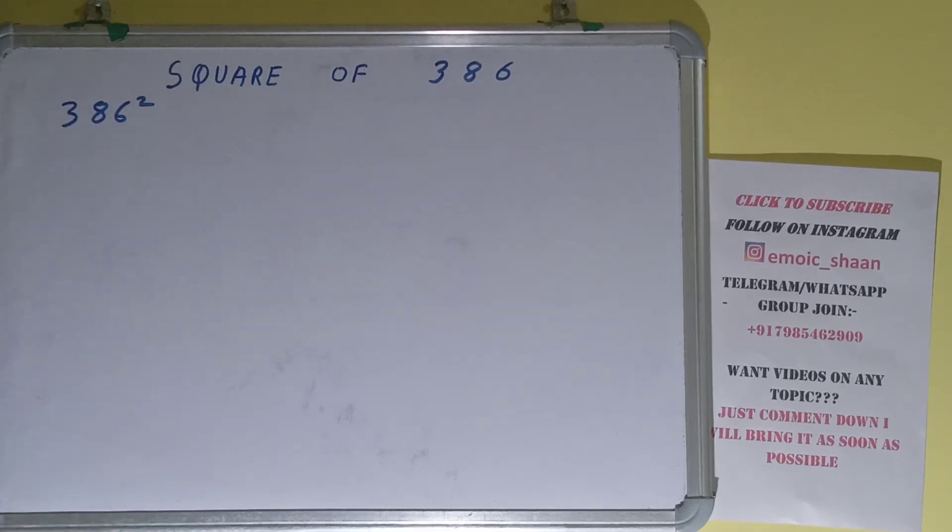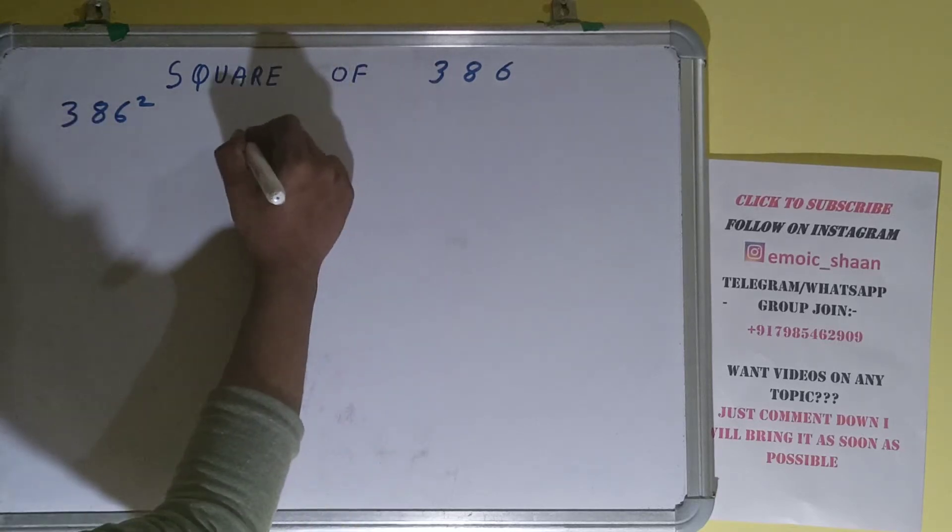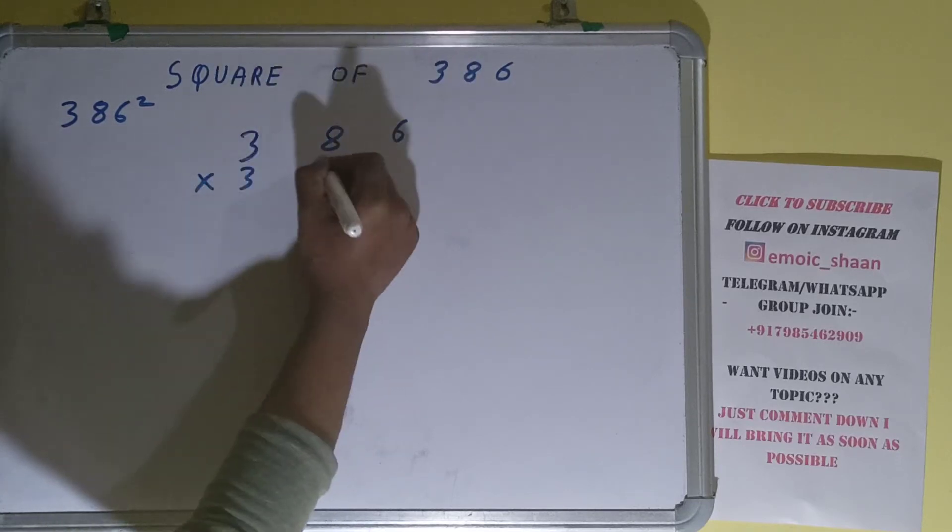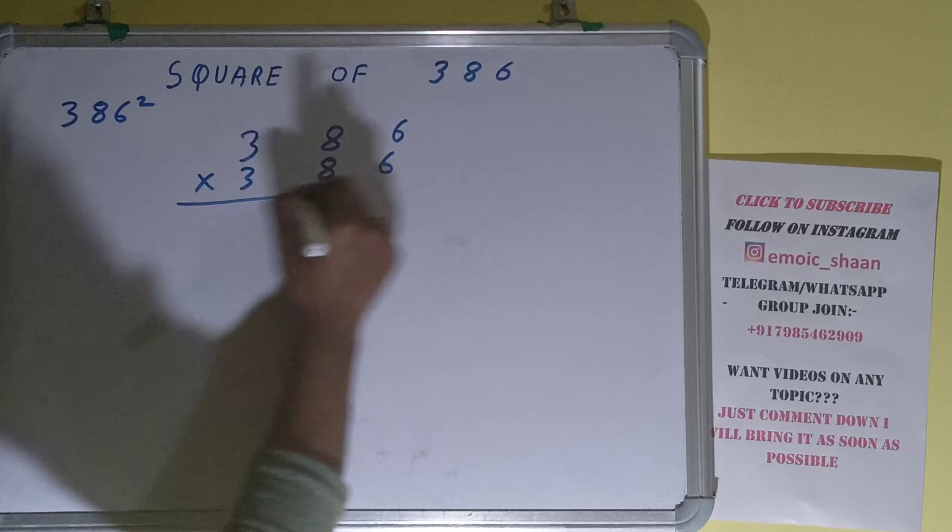Okay, now coming on to the solution. Square basically means multiplying the number by itself, and the number here is 386. To find square of it we need to multiply by itself, that is 386, and do the multiplication. So let's start with this.